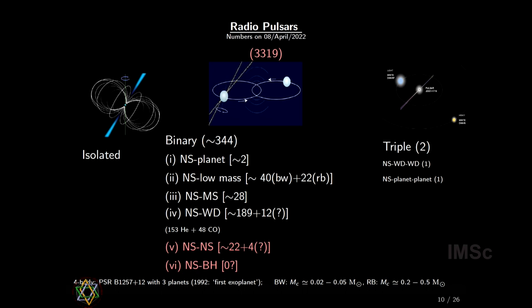The first radio pulsar was discovered in 1967. Today we know more than 3,300 pulsars. Most pulsars are isolated, but there are a few three-body systems and even four-body systems. In fact, the first exoplanet was discovered around a pulsar — though that was not very famous, since people associate exoplanets with sun-like stars where life could grow. There are about 350 binary pulsars, where a neutron star and another star are gravitationally bound and orbit their common center of mass. I study binary pulsars because they are the most useful for studying gravitational physics.